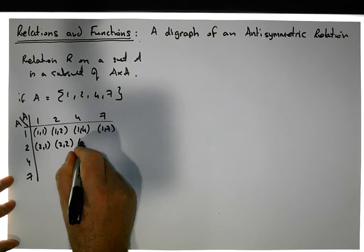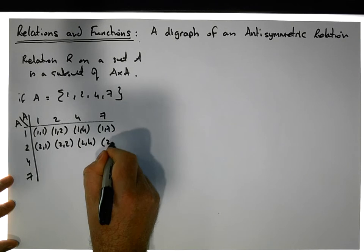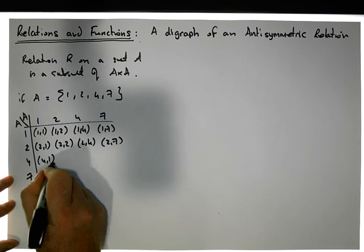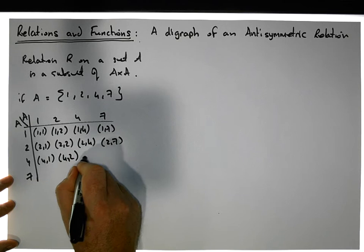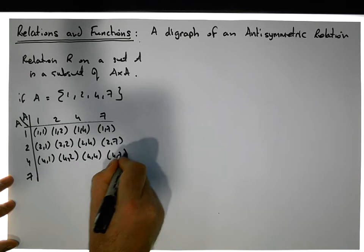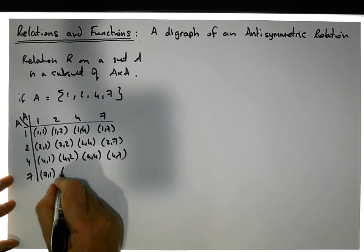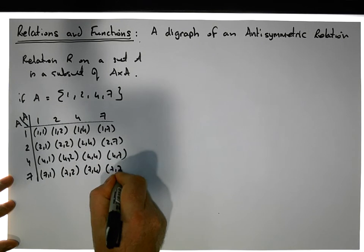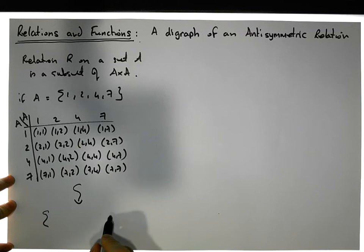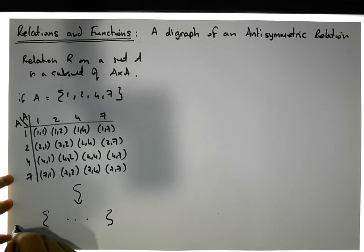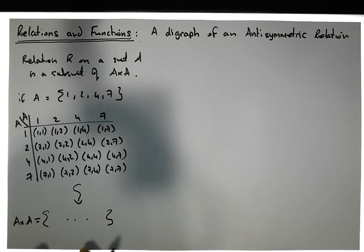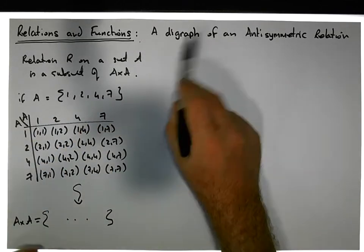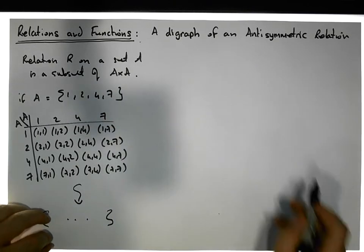Continuing: (2,1), (2,2), (2,4), (2,7), (4,1), (4,2), (4,4), (4,7), (7,1), (7,2), (7,4), (7,7). We take all of those and put them into a set — that gives us A cross A. A relation is simply a subset of this particular set of ordered pairs. In this video we're interested in anti-symmetric relations, so let's give the definition.